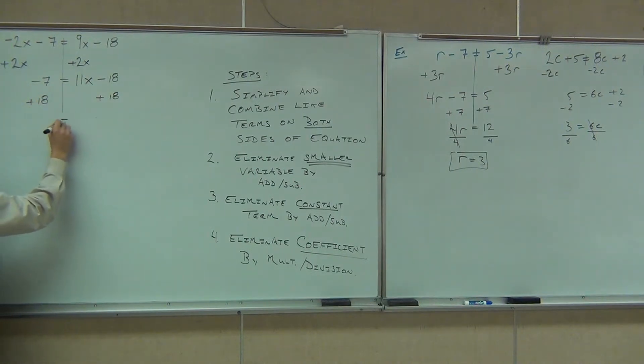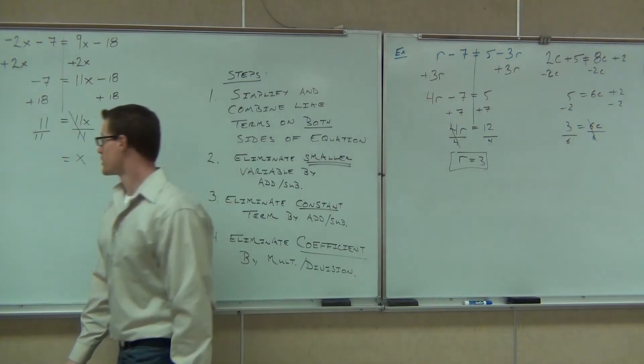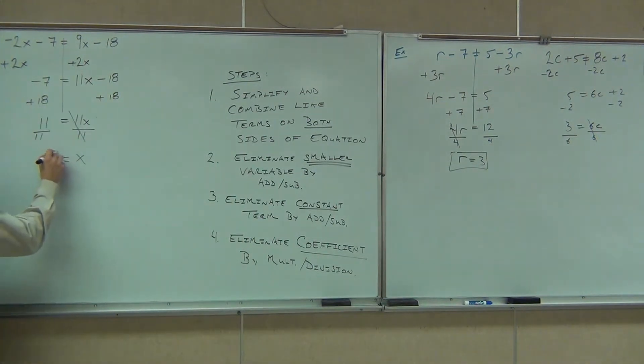On the right-hand side, I get 11x. On the left-hand side, I get 11. And if I divide both sides, what do I divide by? 11. On the right-hand side, we get x because the 11s are gone. But wait a second, what's 11 divided by 11? 1. We get 1. Say x equals 1, because that's an equation. So we do have to have the equal sign.